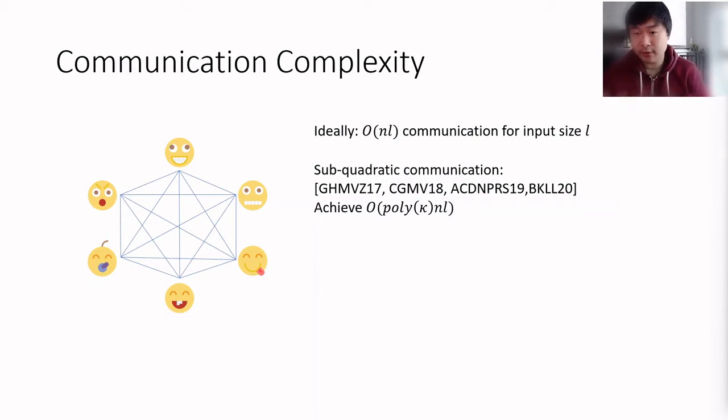So there is an overhead of poly of kappa with respect to the ideal communication complexity that we would like to achieve. So these solutions don't quite give us what we want.